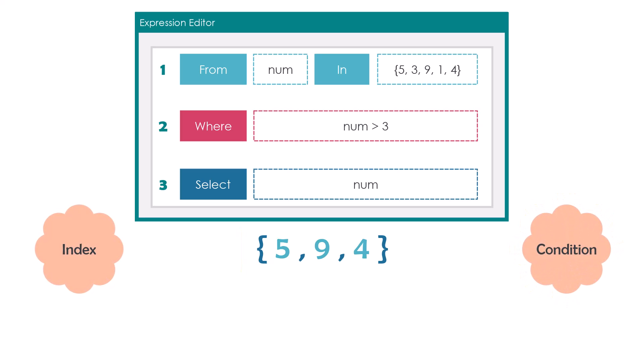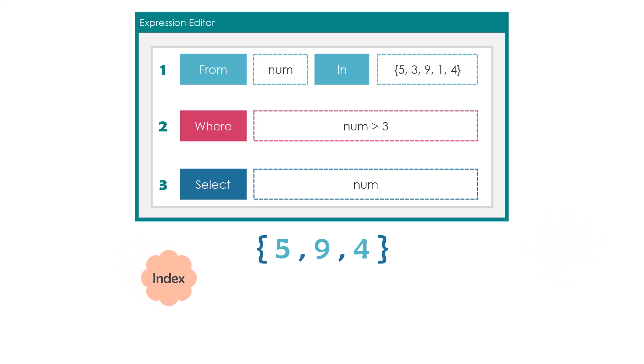The index for the elements works as follows: the first element always has index 0, the next has index 1, the element after it has index 2, and so on — the index always starts with 0. If we want to get the first element, we can use index 0. Or as mentioned we can set a condition to get a specific element. That's why we use element operators.